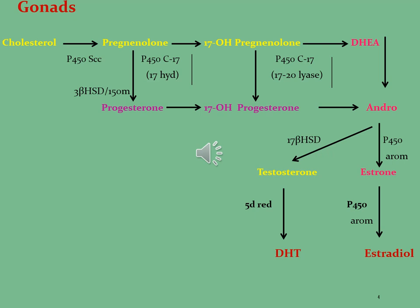Both gametes are haploid cells. Let's see how different kinds of hormones are synthesized within the gonads. Cholesterol is the precursor used for the conversion to pregnenolone by the effect of the P450scc enzyme. In the second step, pregnenolone is further changed into 17-hydroxy pregnenolone by the effect of enzyme P450 C17, that is 17-hydroxylase. The 17-hydroxy pregnenolone is then converted into DHEA, that is dehydroepiandrosterone, by the effect of enzyme 17,20-lyase.